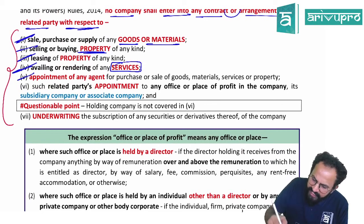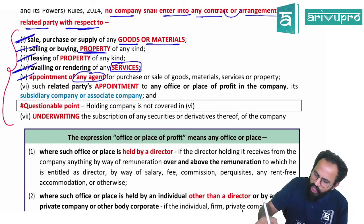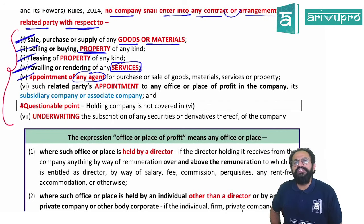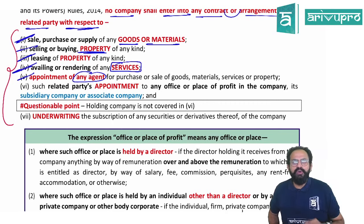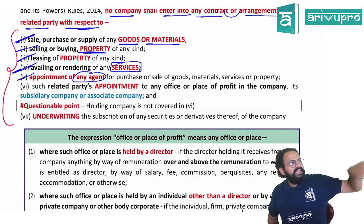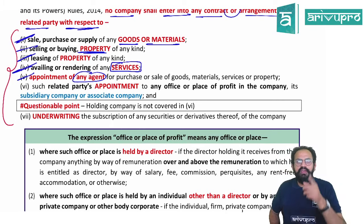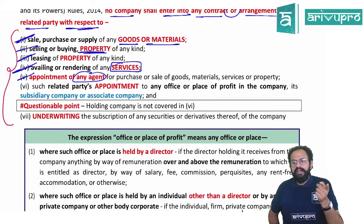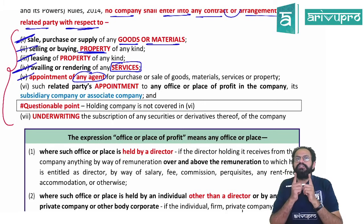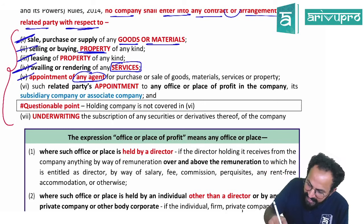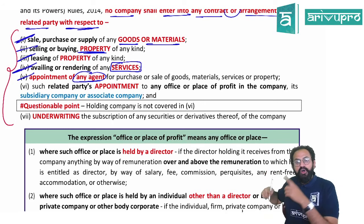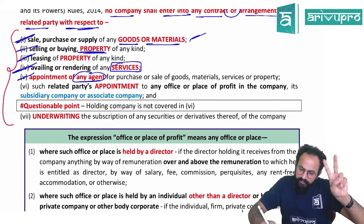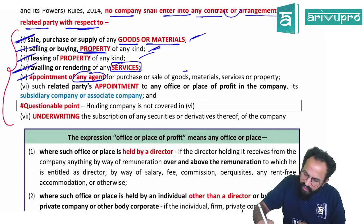Also covered: (5) appointment of any agent for purchase or sale of goods, materials, services, or property. You cannot do indirectly what cannot be done directly — a middleman is also covered. What cannot be done directly cannot be done indirectly either. All three — goods, services, and property — are included.